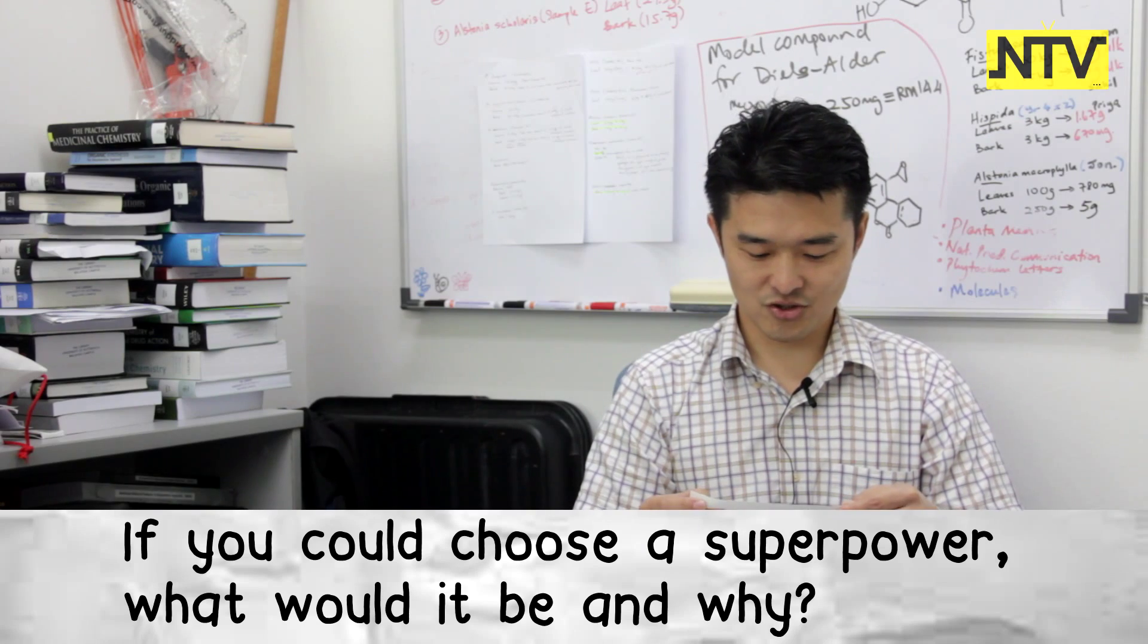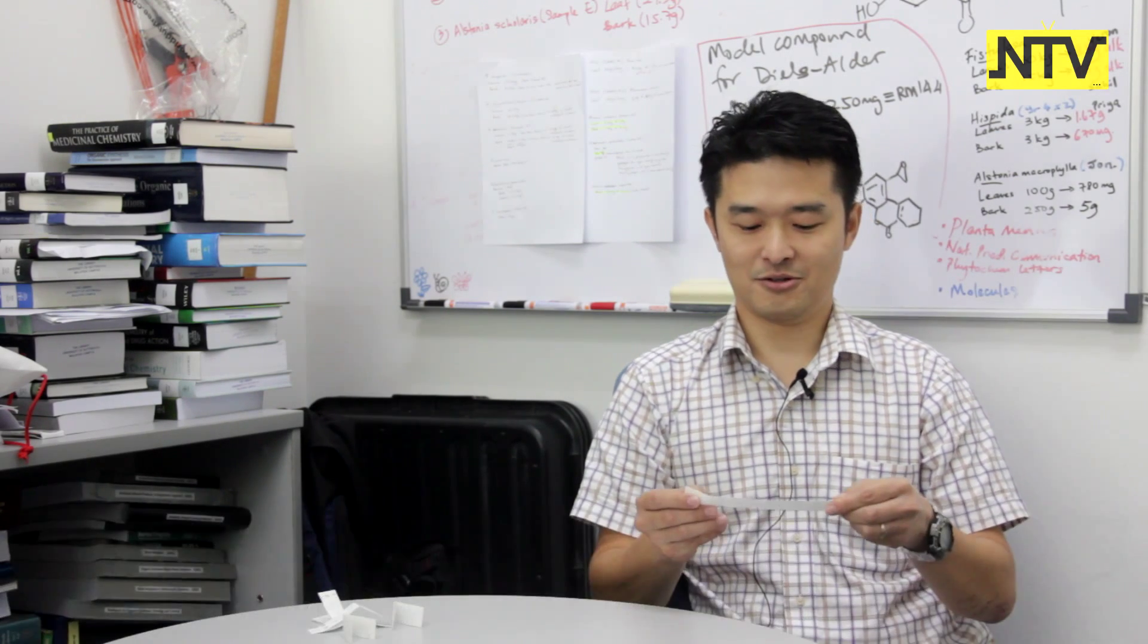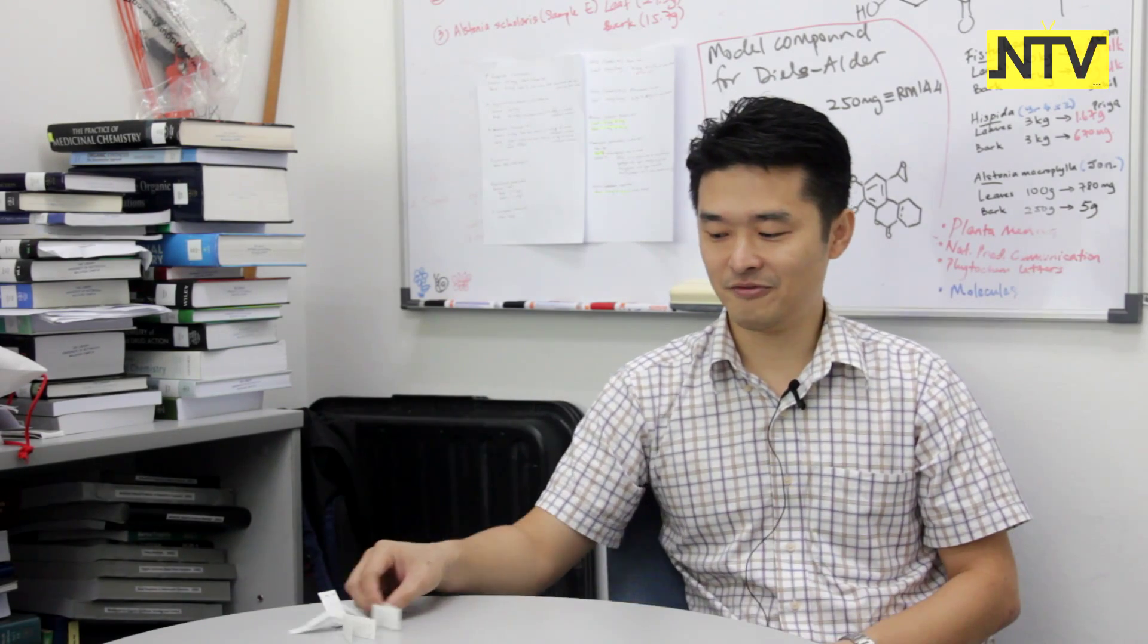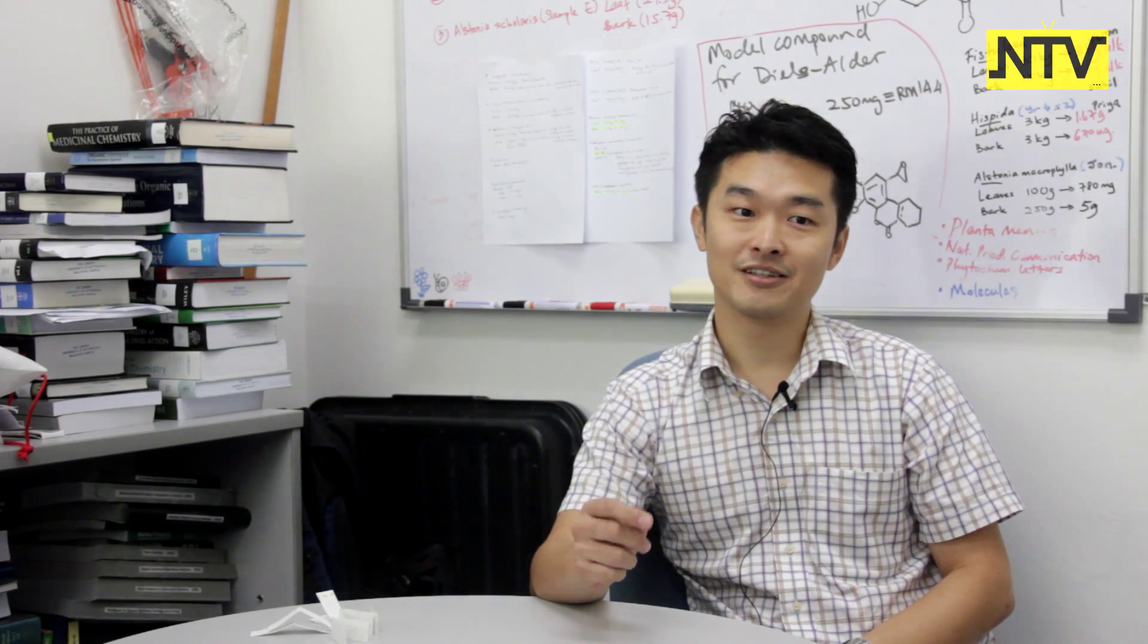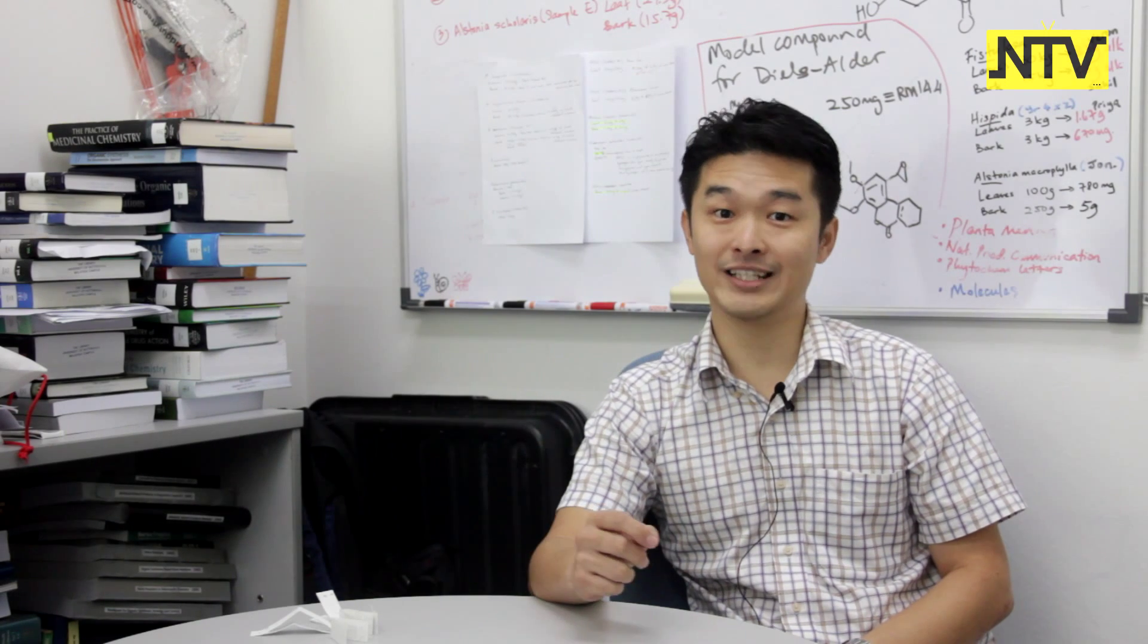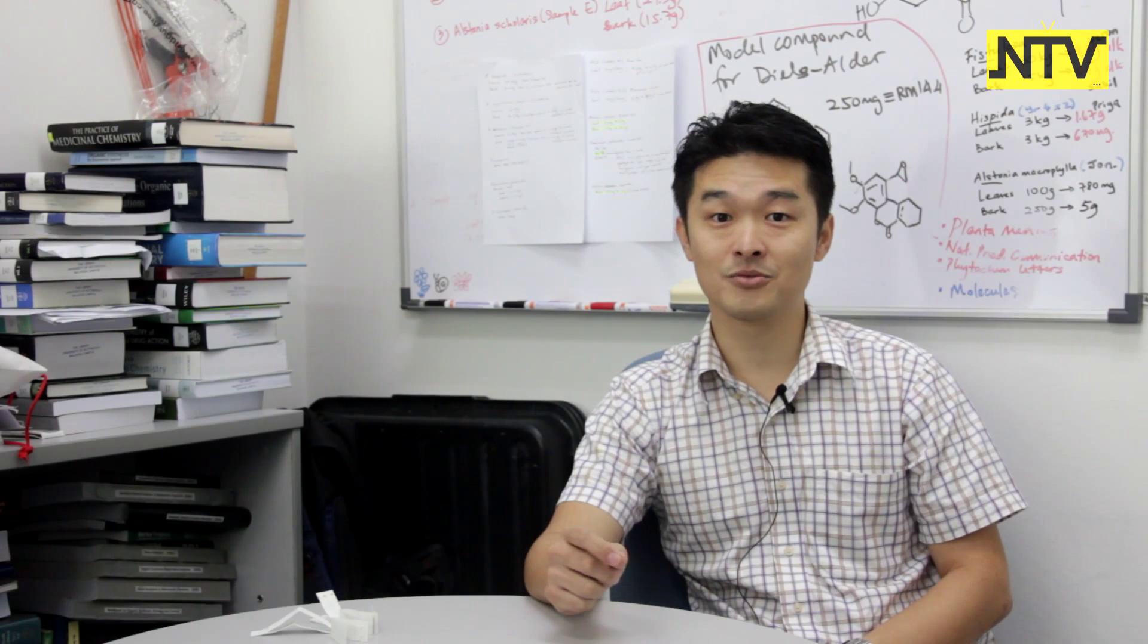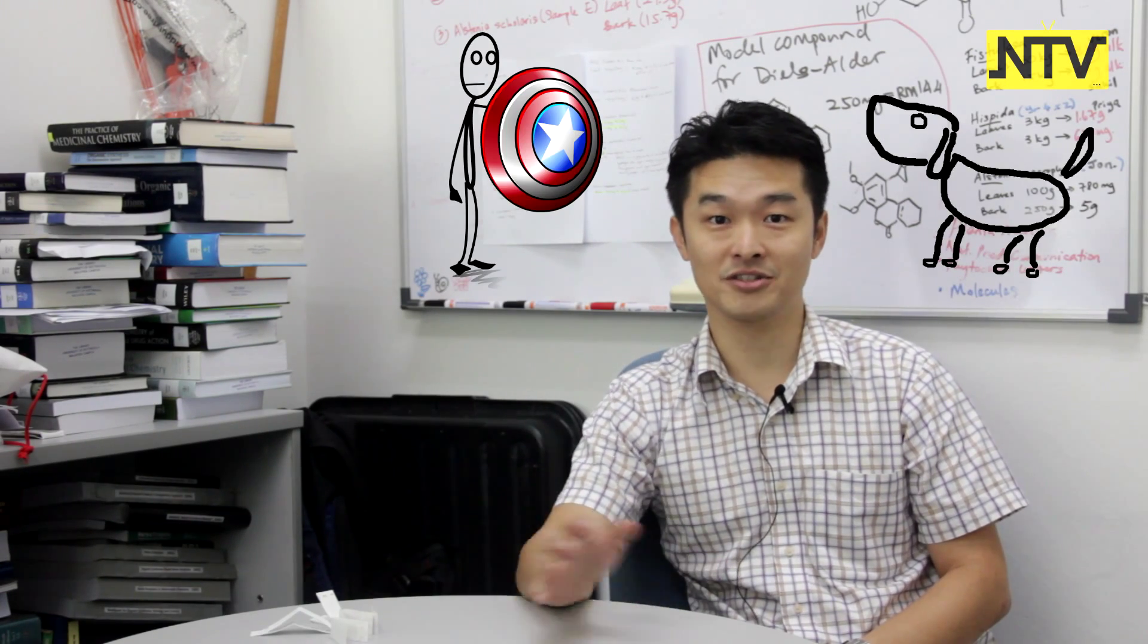If you could choose a superpower, what would it be and why? Okay, now I've seen a few cases where lecturers and students, while they were jogging around the lake area, were greatly intimidated by stray dogs. So if I have that particular superpower, I would wish to shield the campus from stray dogs and keep stray dogs away from the campus area.